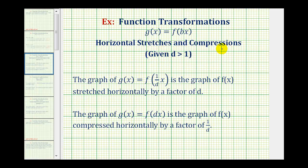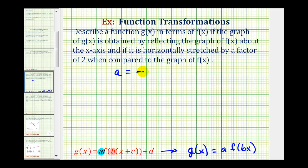For horizontal stretches and compressions, assuming d is greater than one, the graph of g of x equals f of one-over-d times x is the graph of f of x stretched horizontally by a factor of d. In our case, our graph is stretched horizontally by a factor of two. The reciprocal of two is one half, so one half is the value of b. The graph of g of x equals f of dx is the graph of f of x compressed horizontally by a factor of one over d. Since we have a horizontal stretch by a factor of two, b is equal to one half. So a equals negative one because of the reflection across the x-axis, and b equals one half because of the horizontal stretch by a factor of two.